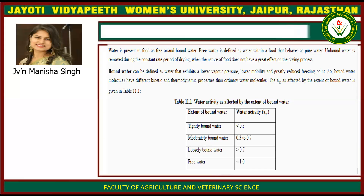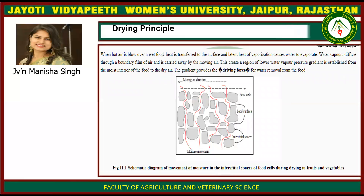The water activity as affected by the extent of bound water is given in the table: tightly bound water has water activity not greater than 0.3; moderately bound water has water activity of 0.3 to 0.7; loosely bound water has water activity more than 0.7; and free water has water activity of 1. When hot air is blown over a wet food, heat is transferred to the surface and latent heat of vaporization causes water to evaporate.